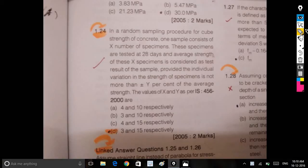We are going to do a random sampling procedure for cubic strength of concrete. One sample consists of specimens. These specimens are tested for 28 days. The average strength of the specimens is considered as the test result.